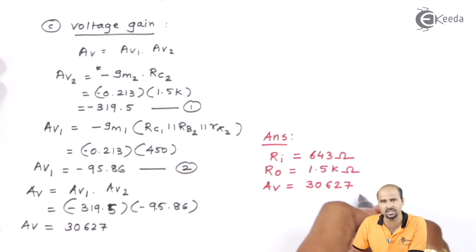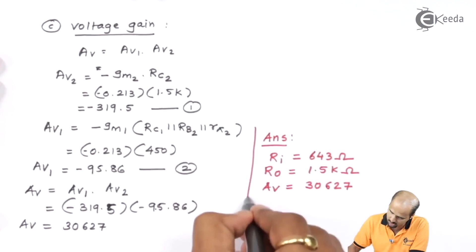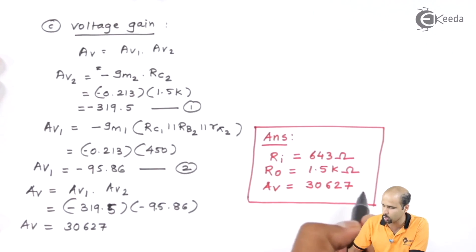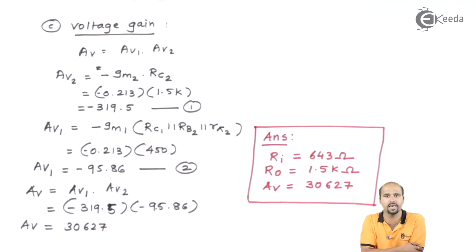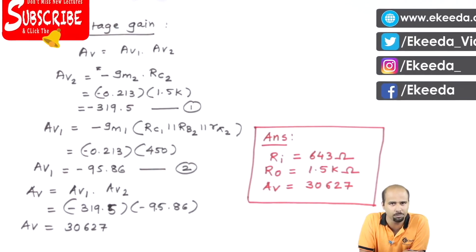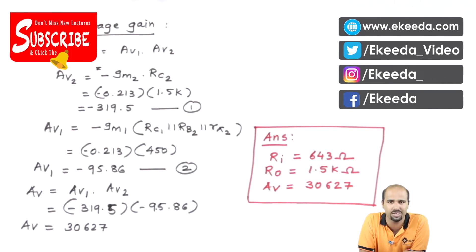In summary, we have got the answers: input resistance RI equals 643 ohm, output resistance RO equals 1.5 kilo ohm, and overall voltage gain AV equals 3627. Voltage gain has no units. This completes problem number 1 based on common-emitter BJT multi-stage amplifier. Thank you so much for watching. Learn more EDC2 with Ikeda videos and subscribe.